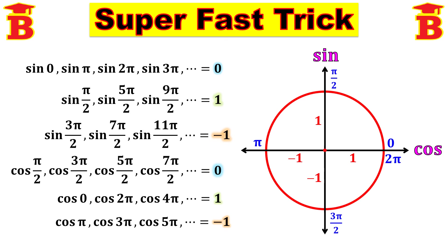Remember: vertical line for sine values — positive side plus 1, negative side minus 1. And remember the horizontal line for cos values — positive side plus 1, negative side minus 1. Just having this diagram in mind, we can write all the trigonometric values.